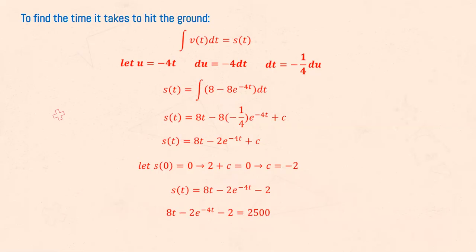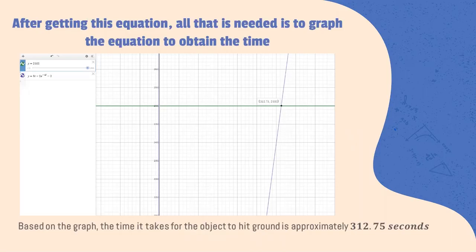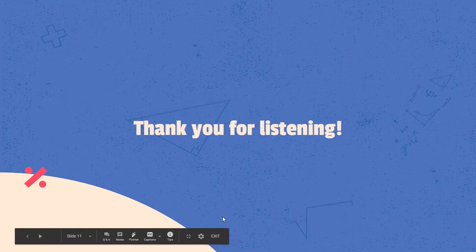We can plug in the given 2500 feet from the problem. We can graph the two sides of the equation and we obtain the time of 312.75 seconds, which is the time it takes for the object to hit the ground. Thank you.